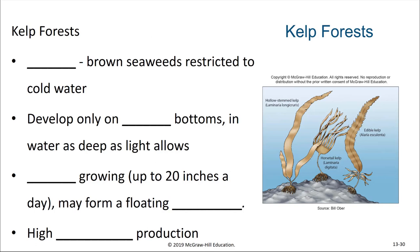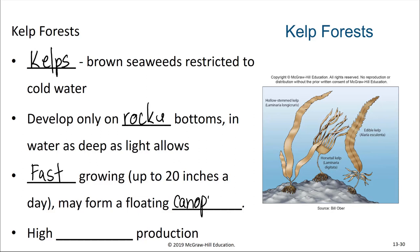We call hard bottom communities that are dominated by brown algae kelp forests. Kelps come in a variety of shapes and sizes but most of them grow to be very large. They develop only on rocky bottoms, in water as deep as light allows. They are fast growing, some growing as many as 20 inches a day, and they may also form a floating canopy. Kelp forests are sites of high primary production.